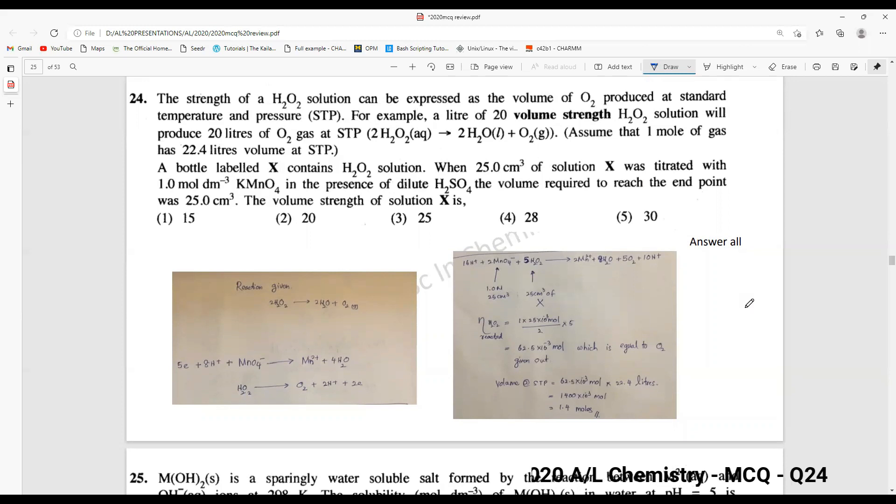Another question that was talked too much. The strength of H2O2 solution can be expressed as the volume of O2 produced at STP. They have given an example, so a liter of 20 volume strength H2O2 will give 20 liters of oxygen. In a reaction like this, if you have 20 liters of oxygen that is given out, the volume strength is 20.